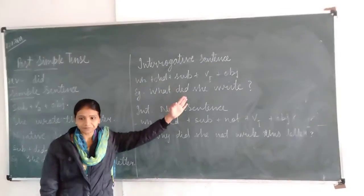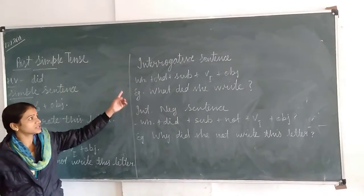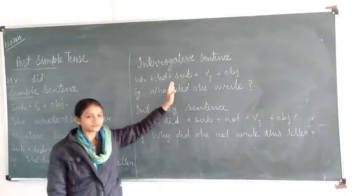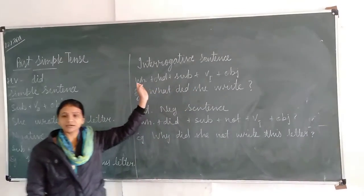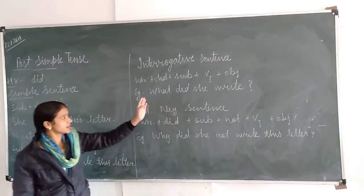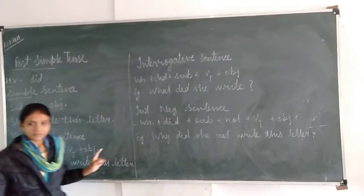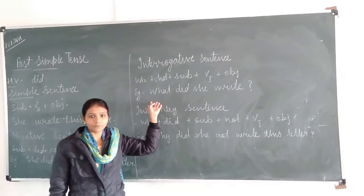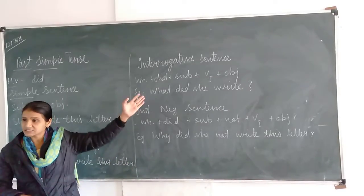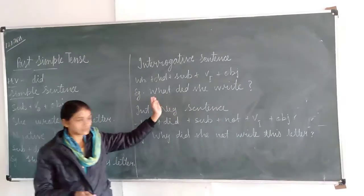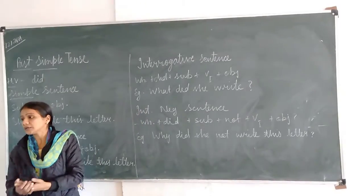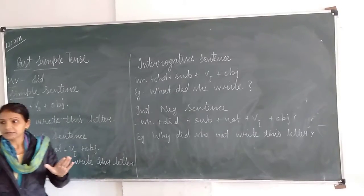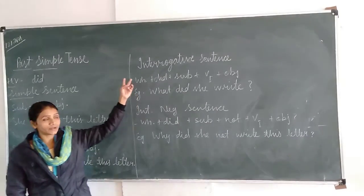Now the next is the interrogative sentence. Interrogative sentence structure is: WH word, then did — did is the helping verb — then subject, then verb first form because we are using did, then object. Example: What did she write? I have not used 'this letter' here because I have used 'what.' If we use 'this letter' then it would be the answer of 'what.' So we are not using 'this letter.' If we are making a yes/no question then we can make it like: Did she write this letter? This is also an example of an interrogative sentence.